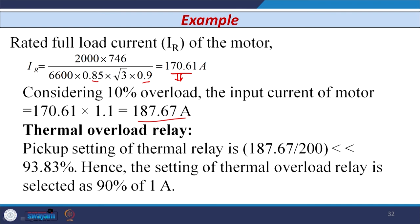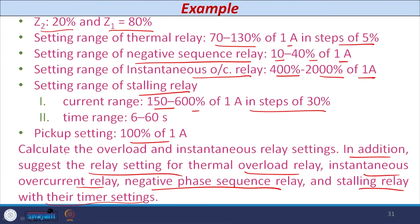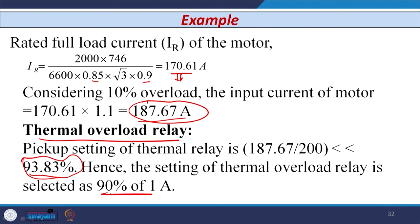For the thermal overload relay, the pickup setting is calculated by converting the overload current to the CT secondary. Using CT ratio 200/1 A, the value comes out to be 93.83% in percentage terms. The thermal relay setting should be below this value. Looking at the thermal setting relay range of 70% to 130% of 1 A in steps of 5%, the next available setting just below 93.83% is 90%. Therefore, the thermal relay setting is set at 90% of 1 A.